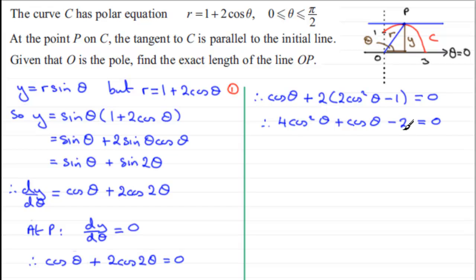Now this doesn't factorize, so we're going to have to use the quadratic formula. So it will be cos theta equals minus 1 plus or minus the square root of 1 squared minus 4 times 4 times minus 2, and all of this is divided by 2 times 4. And if you work this out, what you find you get is minus 1 plus or minus the square root of 33, and this is all divided by 8.